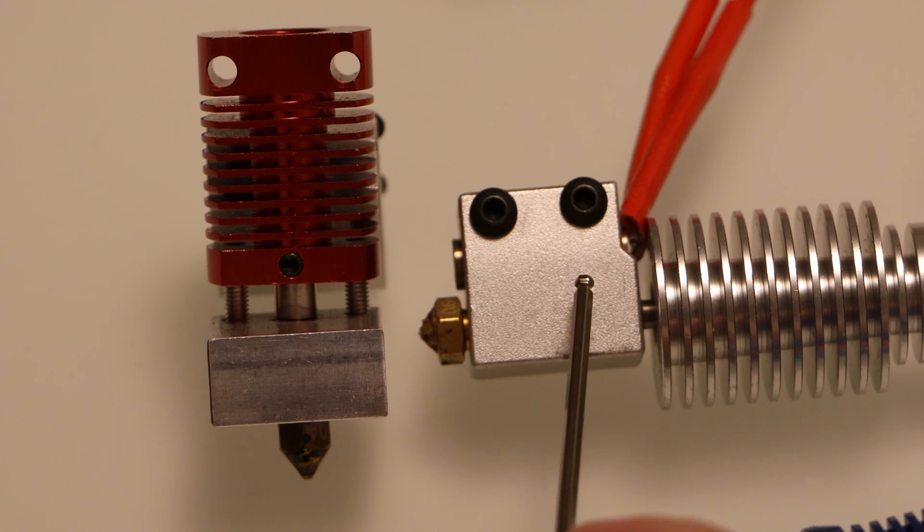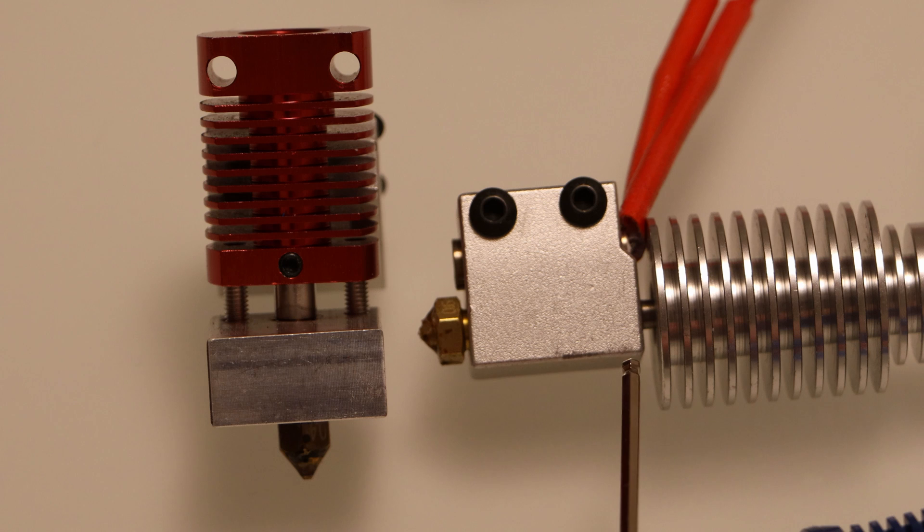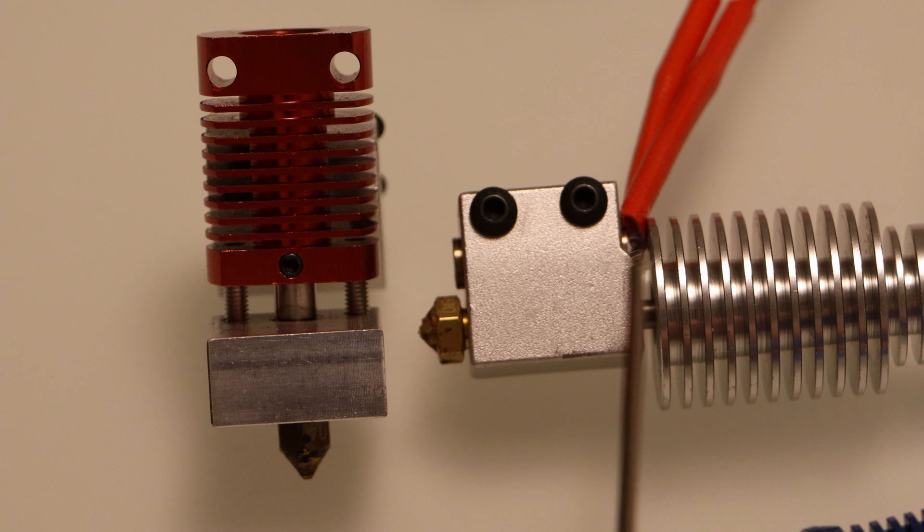The purpose of the heat break is to separate the hot part of the hotend from the cold part of the hotend, and it does this by building in an area of low thermal conductivity. So you'll have very little heat transfer from this part over into this part.